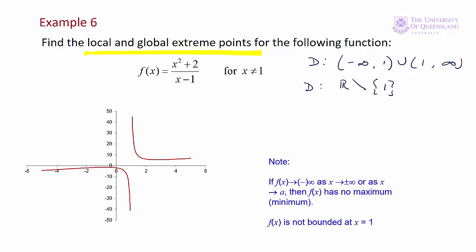Recall if our function approaches infinity or minus infinity as x approaches plus or minus infinity or some number a, then there's no maximum in the case of plus infinity or no minimum if the function approaches minus infinity. The function is not bounded, so we can't apply the extreme value theorem and conclude that a global maximum and a global minimum exist.